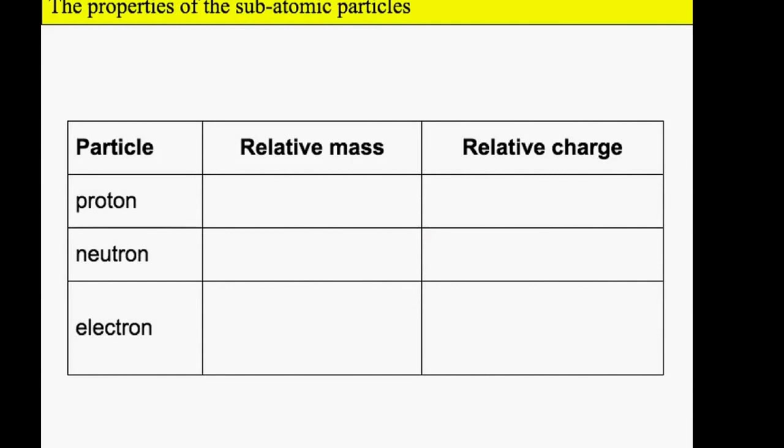This table looks at the protons, neutrons, and electrons, and we're looking at their relative mass, not the actual mass. Proton has got a relative mass of one, neutron has got a relative mass of one, and electron has got a relative mass of one over 1840. You can see that the electron is a lot smaller than the neutron and the proton.